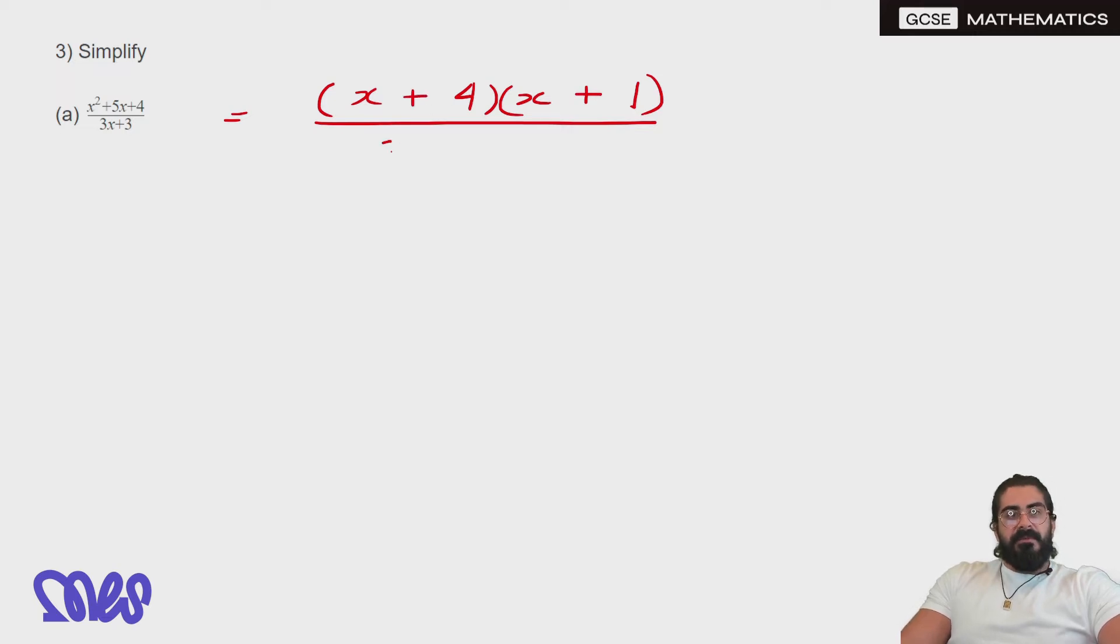In the denominator, we can factorize out a 3. You can see the x plus 1's cancel. We're left with x plus 4 over 3.